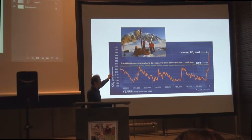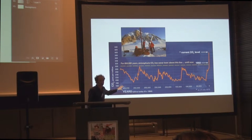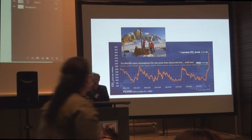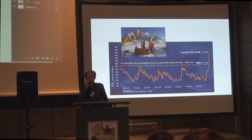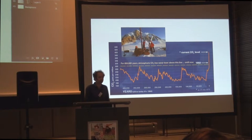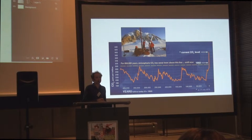You see here periods with high CO2 and periods with low CO2. The low CO2 periods are the ice ages, the cold periods, and the periods with high CO2 are the interglacial warmer periods.